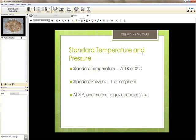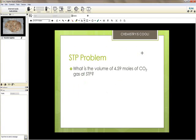The standard temperature and pressure is 273 degrees Kelvin and 1 atmosphere. At standard temperature and pressure, one mole of a gas occupies 22.4 liters. So what is the volume of 4.59 moles of carbon dioxide gas at standard temperature and pressure? Notice we don't care about the molecular weight of carbon dioxide here. We only care about the number of moles.